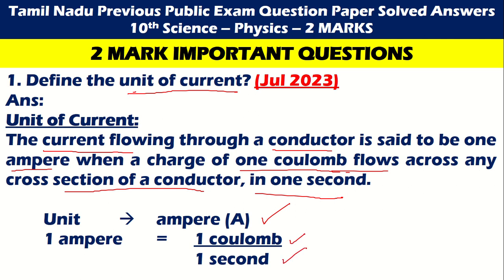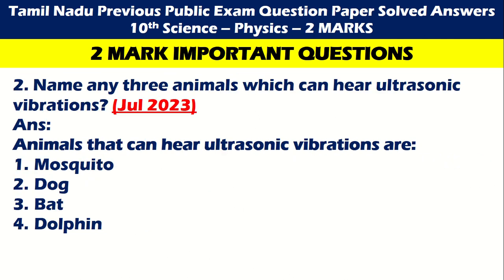If you have any doubt about the question, you can send us a comment immediately and I will reply. Next one: Name any three animals which can hear ultrasonic vibrations. Animals that can hear ultrasonic vibrations are mosquito, dog, bat, and dolphin.